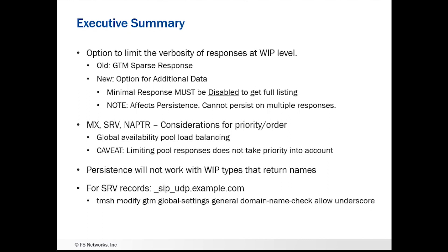You can also limit pool responses — specifying how many responses you want the pool to return. But once again, it doesn't take into account what the priorities are at the protocol level, meaning the record level. The MX record, for example, has its own priority, and GTM is not going to take that into account. It's going to do its own load balancing unless you've set the actual weight for one of the load balancing methods. So that's a caveat you need to keep in mind when configuring these.